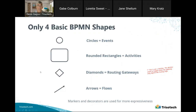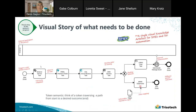The last shape is an arrow — there are various arrows, but they all reflect some notion of flow. There's also a whole set of markers and decorators used for more expressiveness in BPMN. But at the base, if you know how to read these four shapes, you know how to read BPMN. And if you know how to draw these four shapes, you know how to draw BPMN.